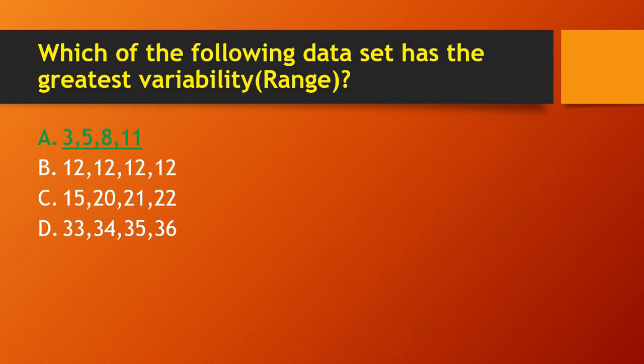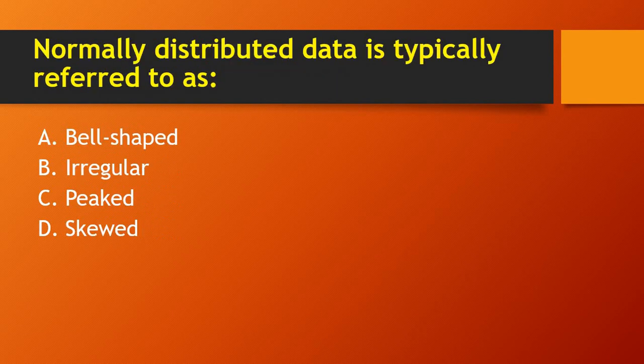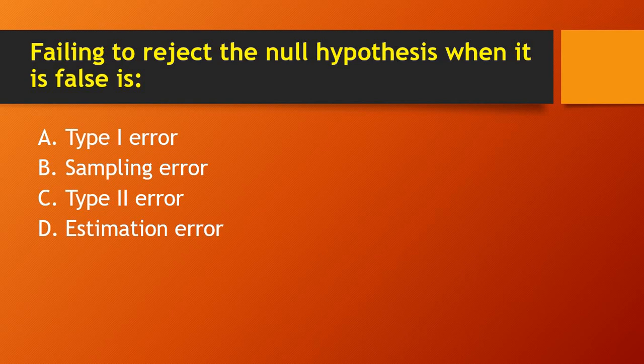Next question: normally distributed data is typically referred to as — bell-shaped, irregular, peaked, or skewed? You know that normally distributed data is typically referred to as bell-shaped.